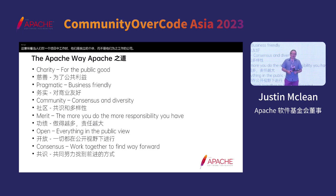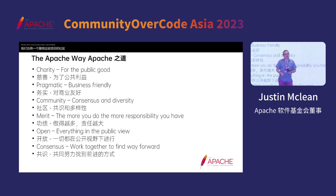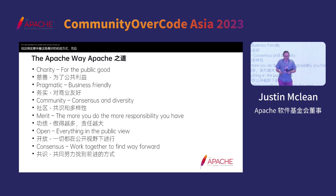That said, we also have a very pragmatic, business-friendly licence, which means a company can take the software and do just about anything with it — so there are sort of two sides to it. We also have a community around these projects, and that community makes decisions by consensus. This doesn't mean everyone has to agree, but it does mean this is the best way forward — for the project, not for a certain person or a certain company.